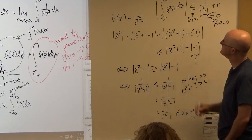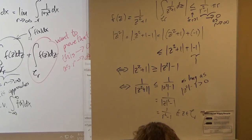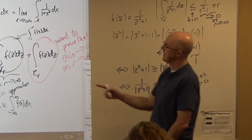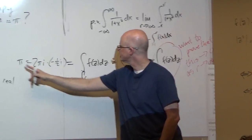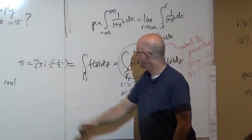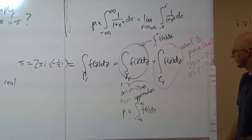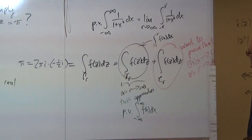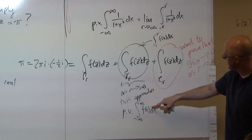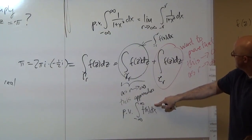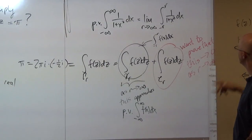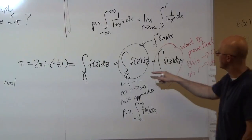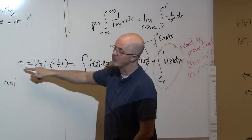So for r bigger than 1, this quantity goes to zero as r goes to infinity. Come back to the equation: the sum of the two integrals equals π for any fixed r. As r goes to infinity, the semicircle integral approaches zero, and the straight-line integral approaches the principal value of the real integral. Therefore, in the limit, the principal value of the improper integral equals π.